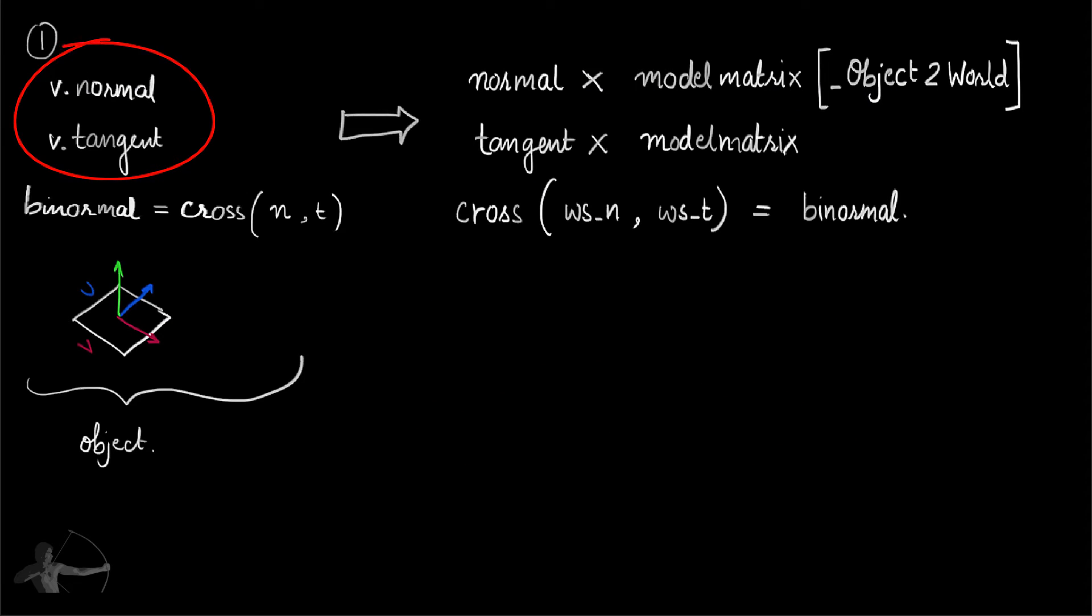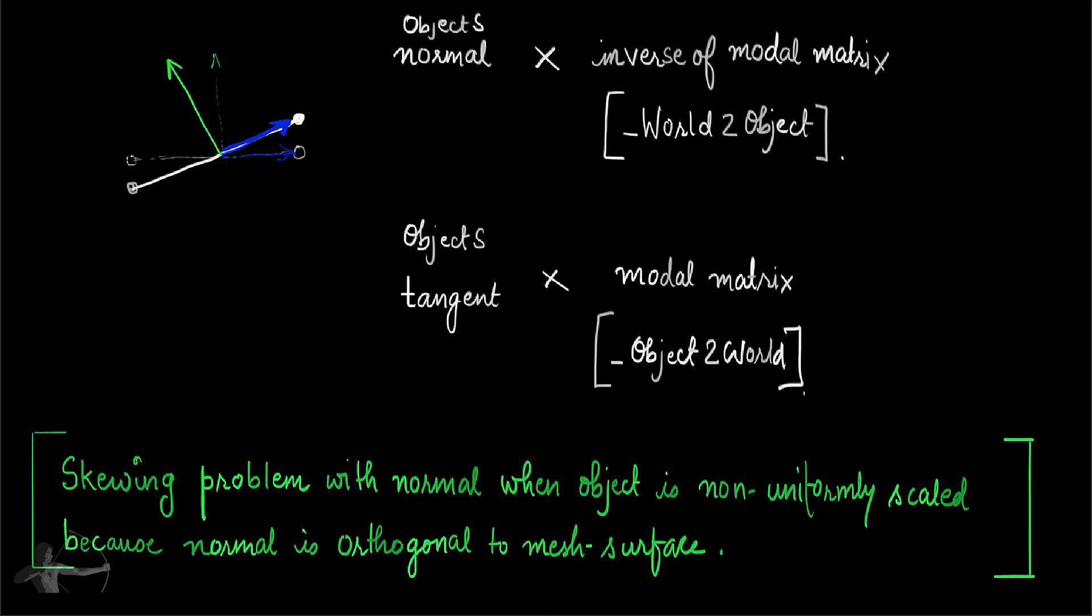We will read the normal value from the mesh, we will read the tangent value from the mesh, and then we will multiply the object space normal value with the inverse of model matrix to transform it to the world space normal values, because we want to avoid the skewing problem or the normal shifting problem that happens because normals are orthogonal to the mesh surface.